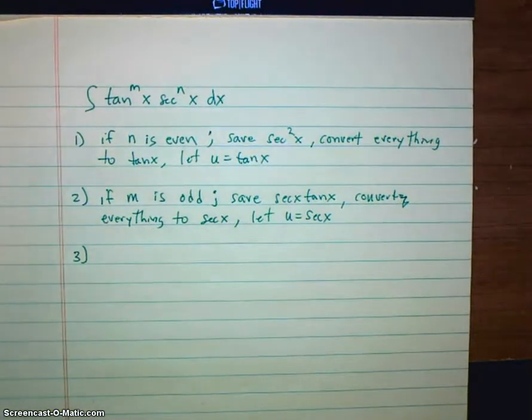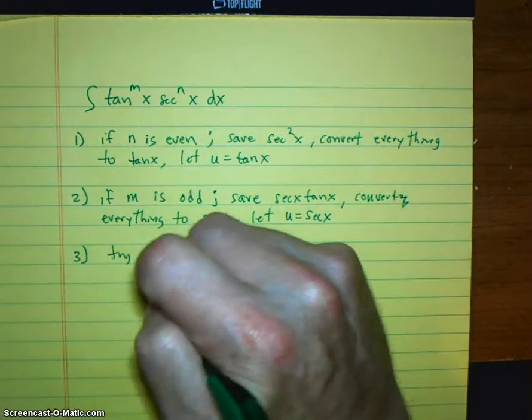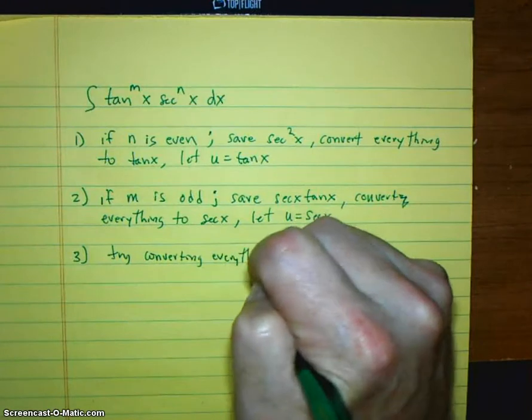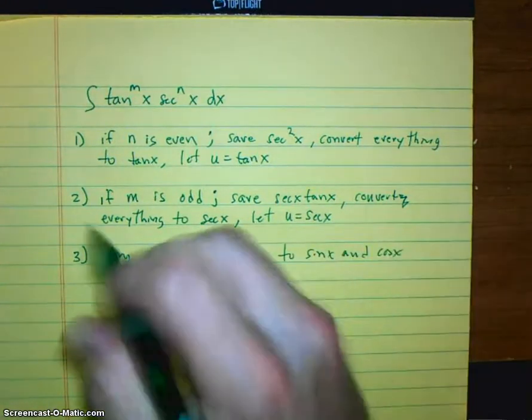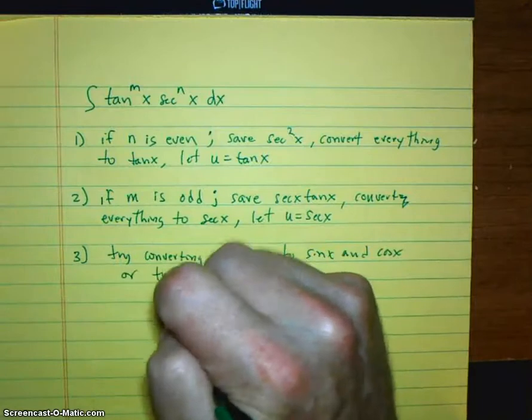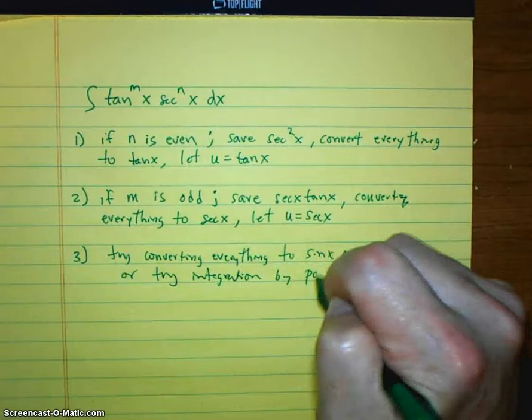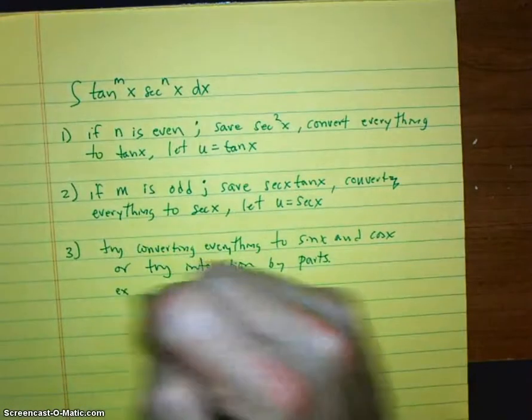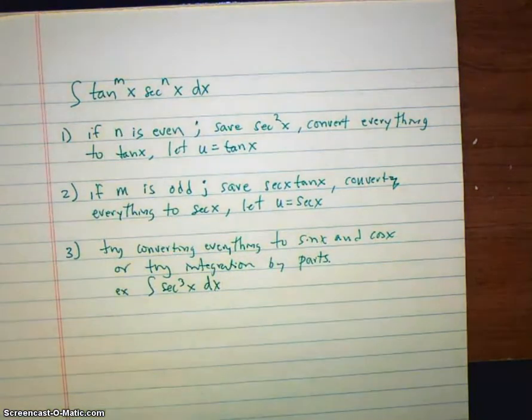Well, we can do better than that. But just some ideas. Try converting everything to sine x and cosine x. Or try integration by parts. And we saw that the other day with one of our problems. For example, the integral of secant cubed x dx. That was an integration by parts problem.